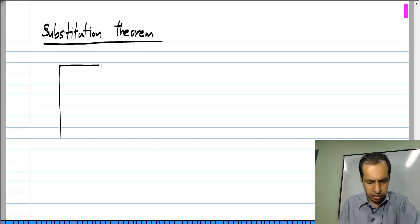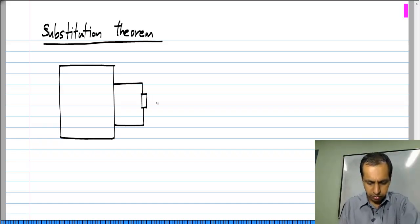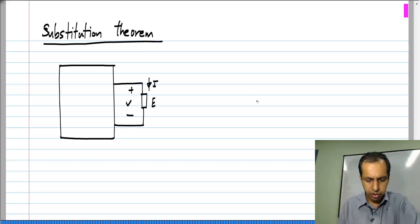Let me again consider a circuit with an element E connected to it. It has a voltage V across it and a current I through it.